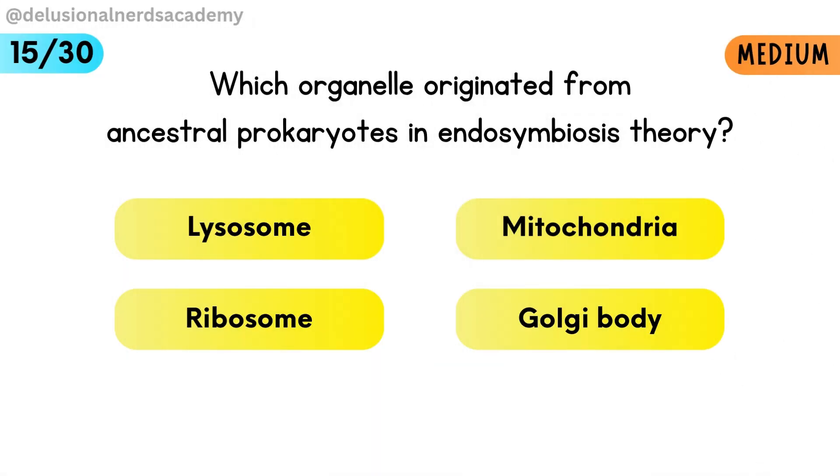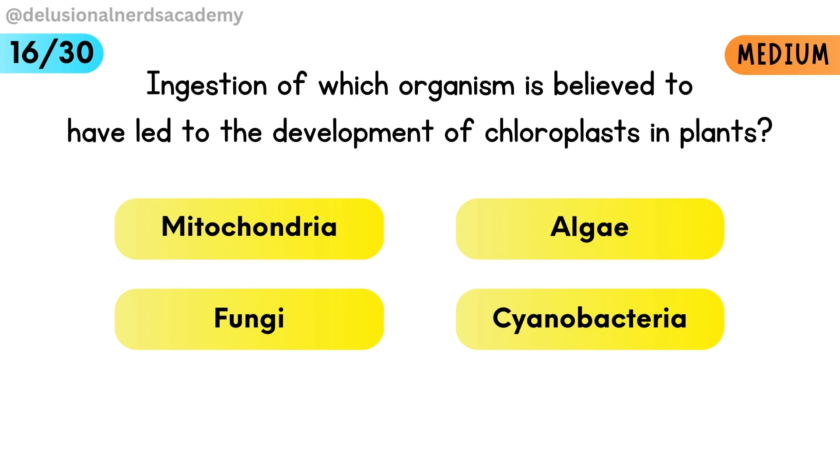Which organelle originated from ancestral prokaryotes in endosymbiosis theory? Mitochondria are believed to have originated from ancestral prokaryotes. Ingestion of which organism is believed to have led to the development of chloroplasts in plants? Chloroplasts came from cyanobacteria through endosymbiosis.